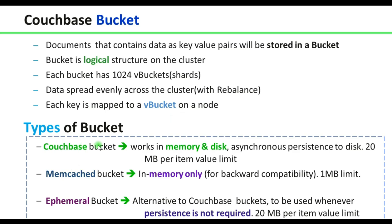The three types of buckets are: Couchbase, Memcached, and Ephemeral. The Couchbase bucket works in both memory and disk — if you want to access data from memory and also store it permanently on disk, choose the Couchbase bucket. The Memcached bucket is for backward compatibility only. The Ephemeral bucket is an alternative to the Couchbase bucket, used whenever persistence is not required — meaning data cannot be stored to disk.